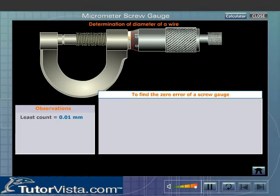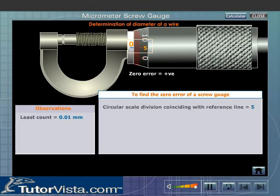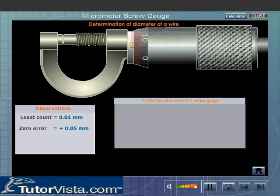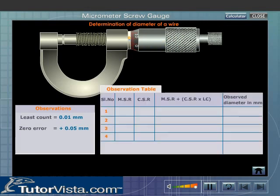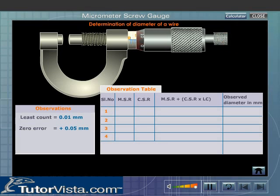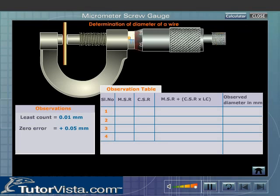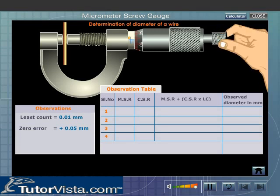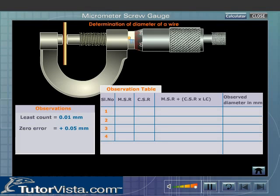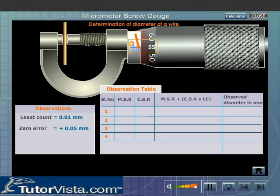Now check whether the screw gauge has a zero error or not. Place the wire in between the stud and the flat end of the screw. The ratchet is turned clockwise so as to hold the given wire gently between the stud and the flat end of the screw. Note the main scale reading. Find the coinciding circular scale reading.